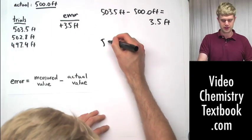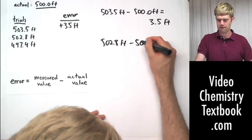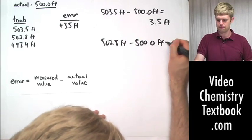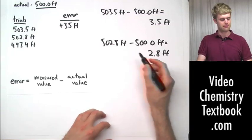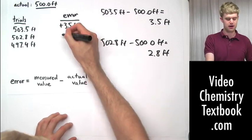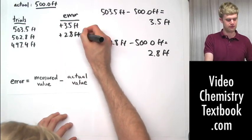For the second measurement, once again, 502.8 feet minus 500.0 feet is going to give us an error of 2.8 feet. And this is a positive number, we are 2.8 feet above the actual, so plus 2.8.